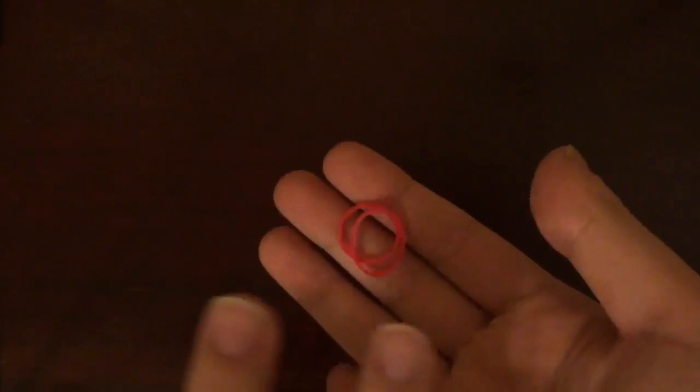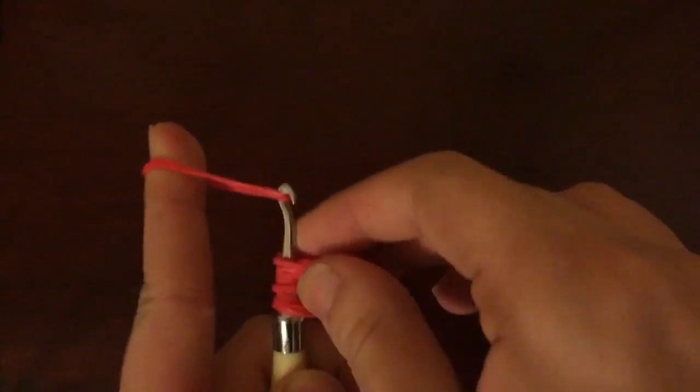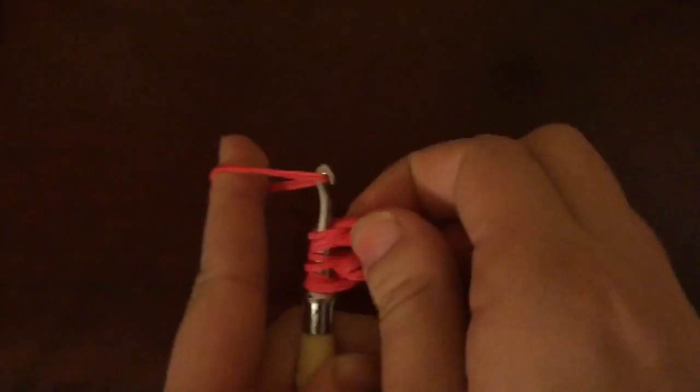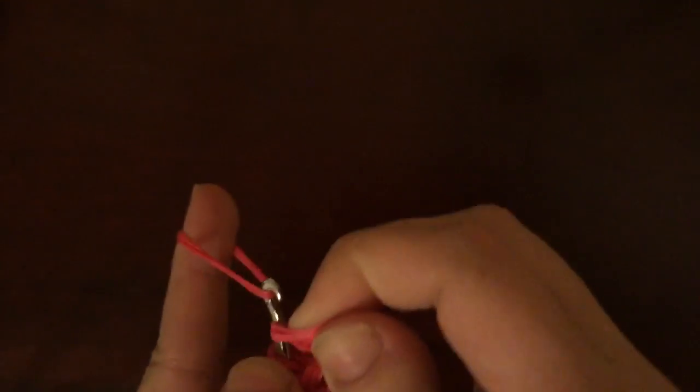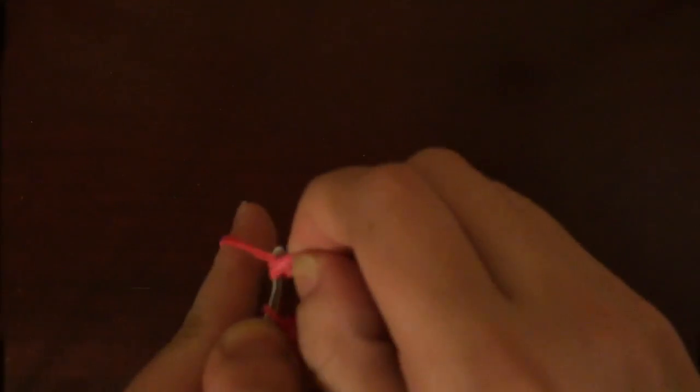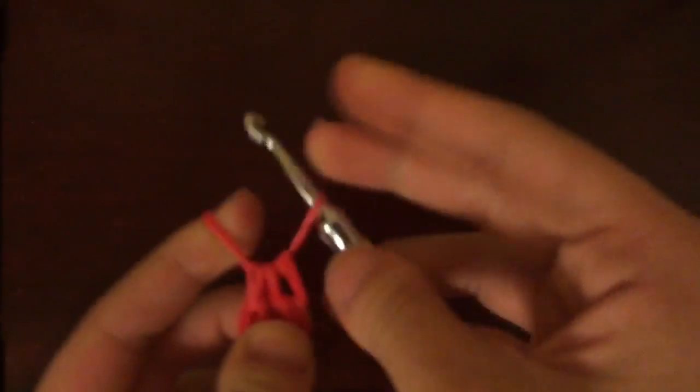Now I'm going to start taking 2 rubber bands at a time. I'm going to be placing them on the hook right there, and I'm going to be sliding everything that's already on the hook here onto the 2 new rubber bands. So, just like we did earlier, slide them all on and place the open end onto the hook.